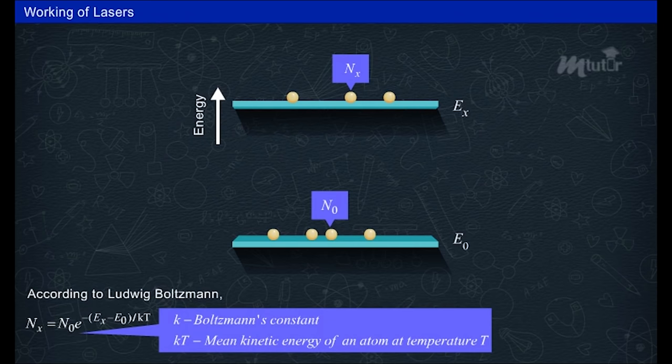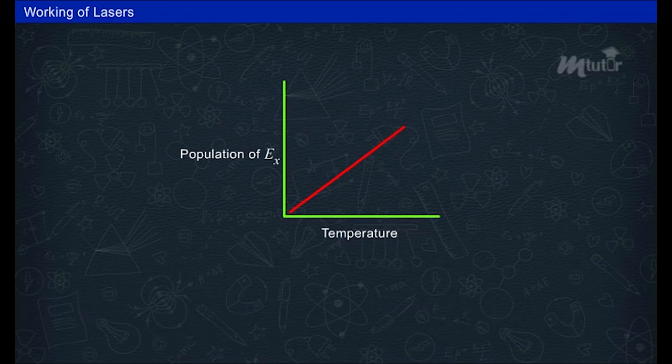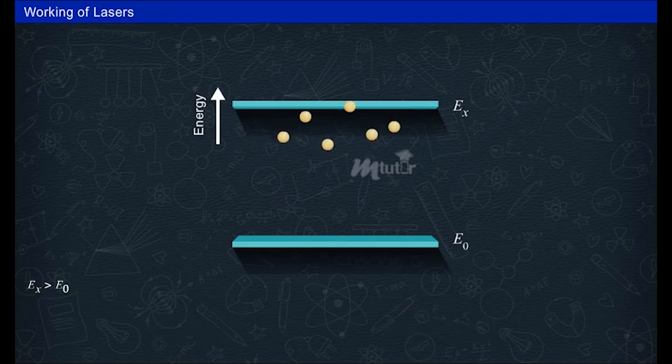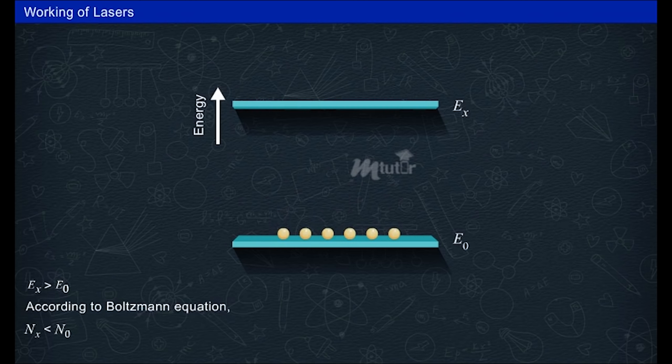As the temperature increases due to thermal agitation, more number of atoms move to the higher energy state E_x. Since E_x is greater than E_0, the Boltzmann equation requires N_x to be lesser than N_0.